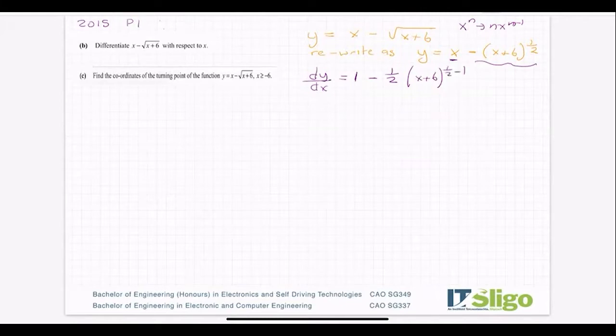As you can see, I more or less don't touch what's inside while I'm using this rule. That's the nature of a chain function. But I must multiply it by the inner function differentiated. So if I differentiate x plus 6, I just get one.